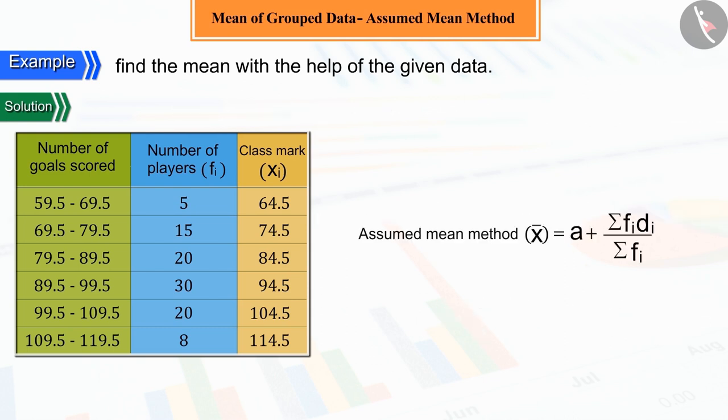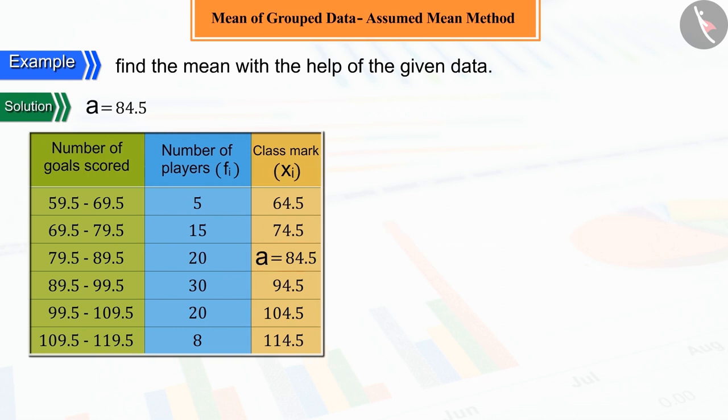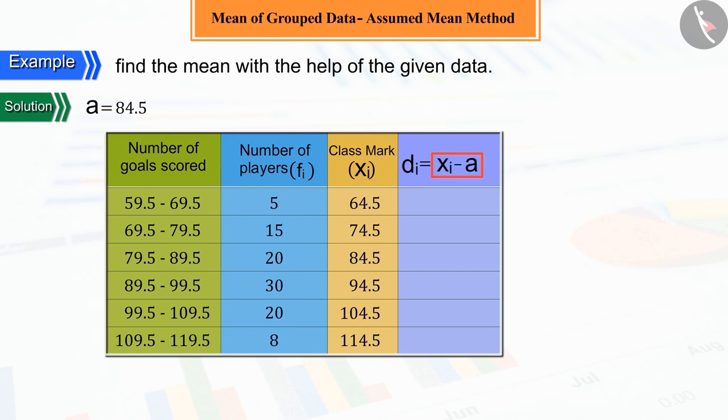As you may remember, to solve the same type of problem in the previous video, we used the assumed mean method. Here, the assumed mean is calculated from xi. Suppose here, the assumed mean A is 84.5, in which the difference between A and each xi is represented by di.